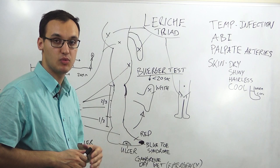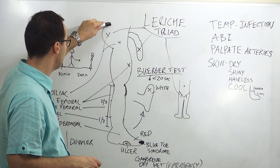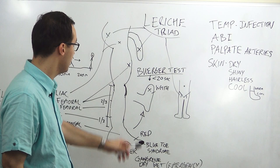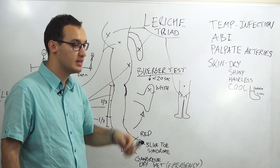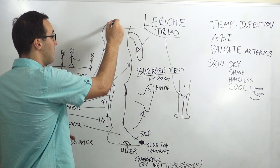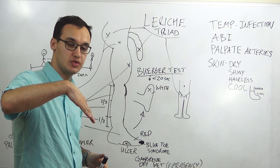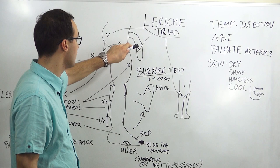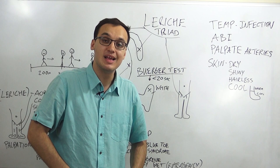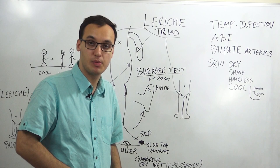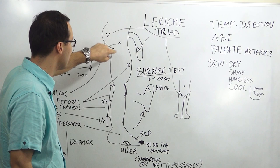Here I have drawn a lower leg showing the buttock, thigh, calf, foot, and also a penis — because the Leriche triad is related to peripheral artery disease. It involves: claudication pain in the buttock region while walking, erectile dysfunction, and when we palpate the femoral artery in the groin region we cannot feel the arterial pulsation.